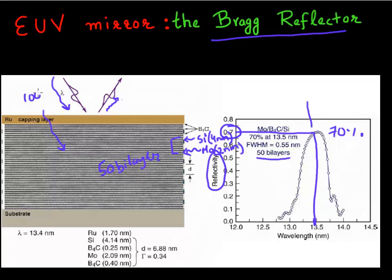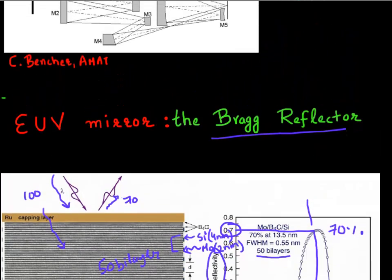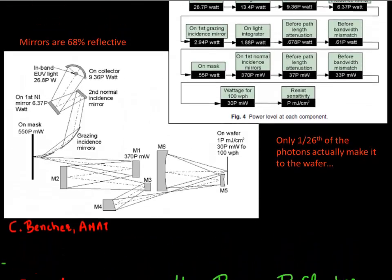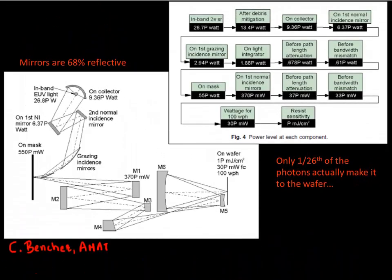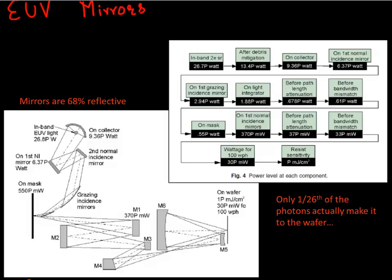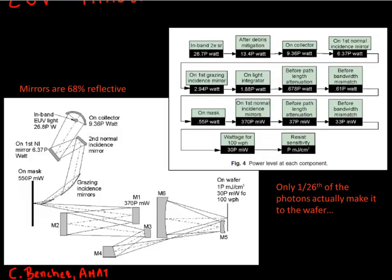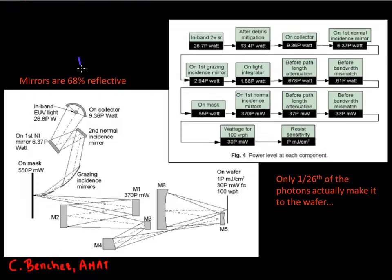So for 100 incoming photons, you only reflect 70 of them back. So again, this points to the amount of inefficiency that you generate from this optical path. And so each of these mirrors has a reflectivity of only around 70%.